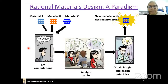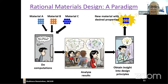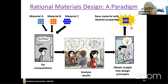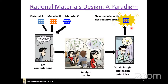What does a computational scientist like me do? We take a bunch of materials — A, B, C — we do computations on them, analyze our results, gain insight into design principles, and with this insight we design a new material with desired properties. Why do we do computations at all? Doing experiments is rather expensive, and nowadays doing a computation is often much quicker and much cheaper.